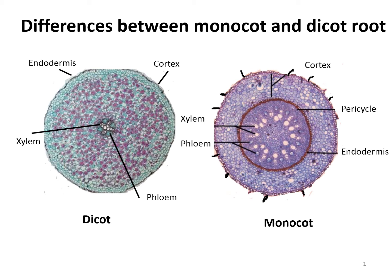The cortex is completely narrow in dicots and wider in monocot. The shape of xylem is angular or polygonal in dicot, while in monocot it is round or oval. Examples of dicots include pea, beans, and spinach, while monocot examples are maize, palm, and grasses.